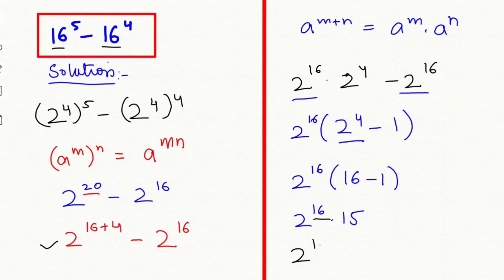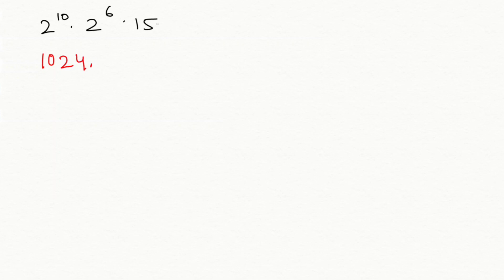Now I am going to split this 16, so 2 to the power of 10 plus 6, times 15. And again I am going to apply this exponential rule. So this will be equal to 2 to the power of 10 times 2 to the power of 6 times 15. Now 2 to the power of 10 equals 1024 and 2 to the power of 6 equals 64.